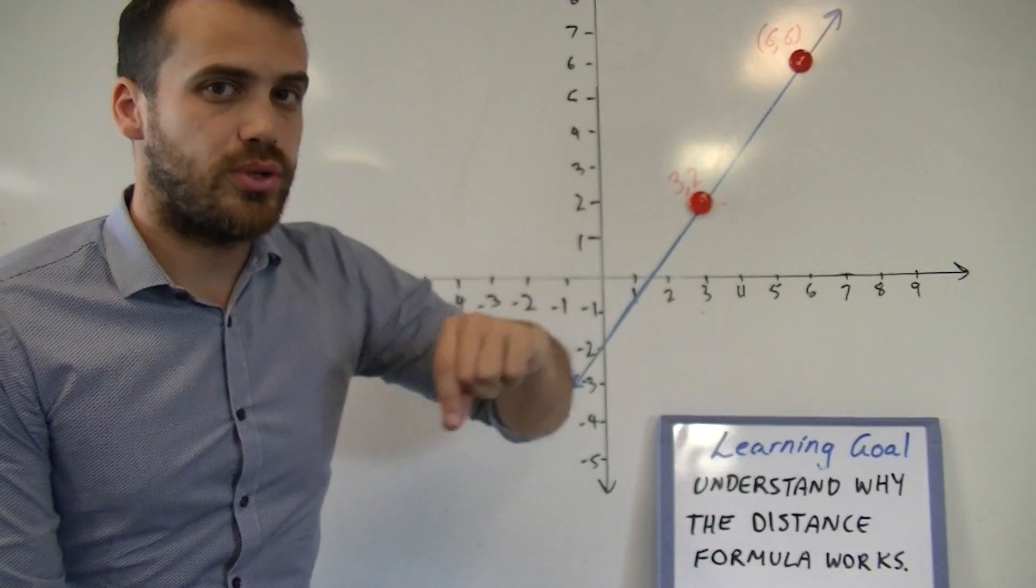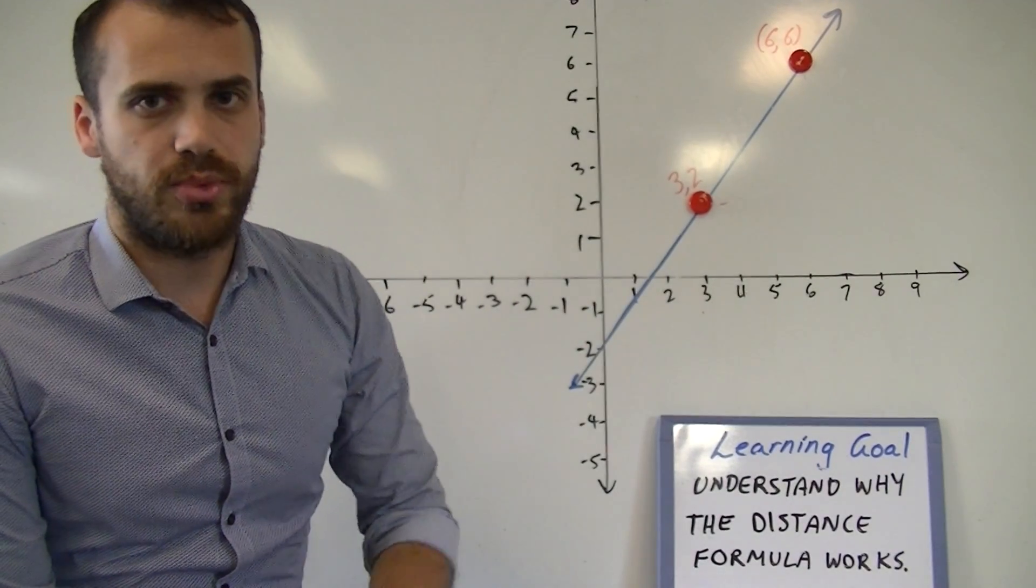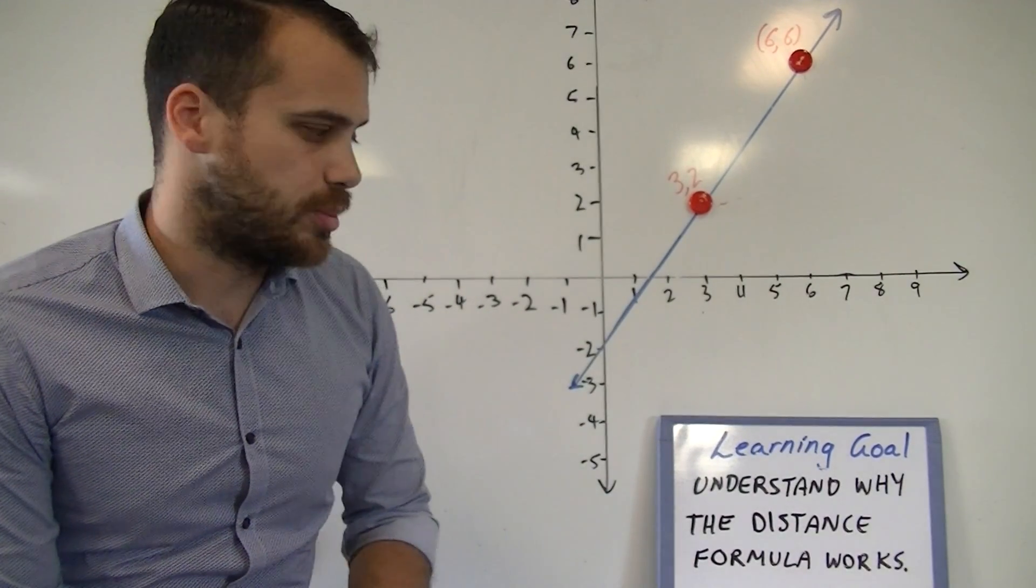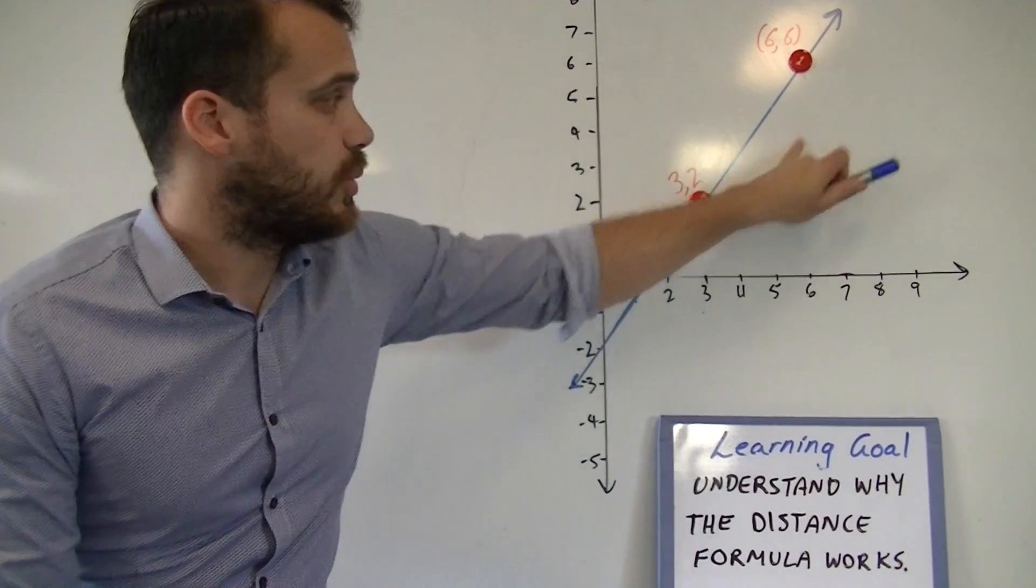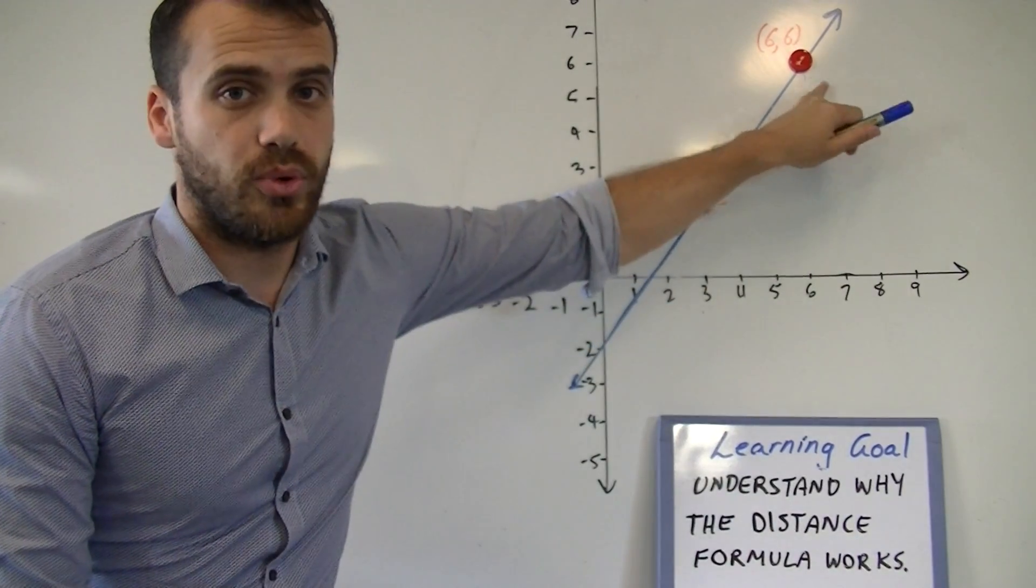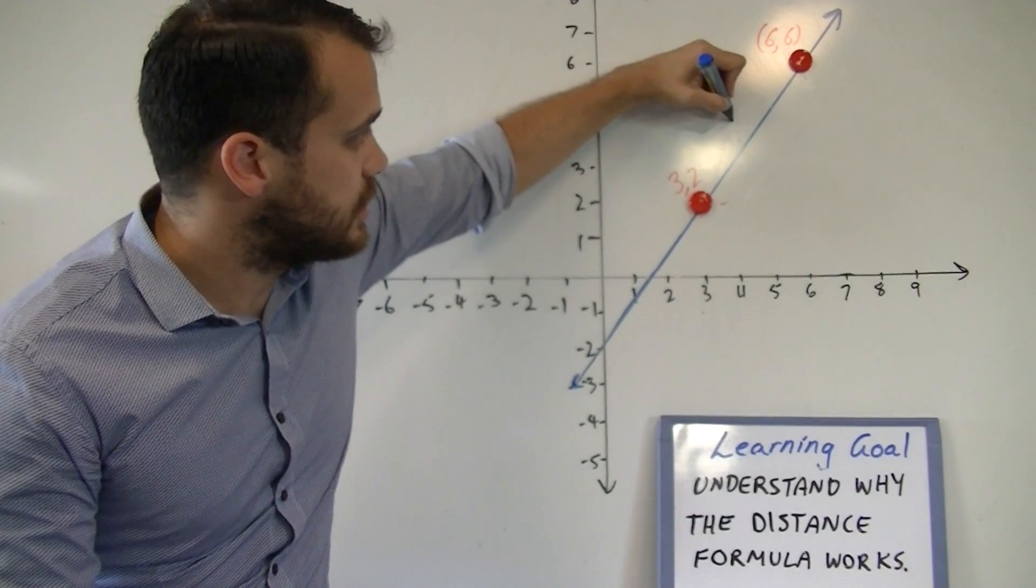Now, I'm going to talk you through why the distance formula works before we actually look at what the distance formula is. Looking at our line, we want to know the distance between those two points. I'm going to call that distance C.